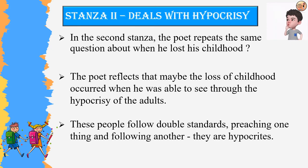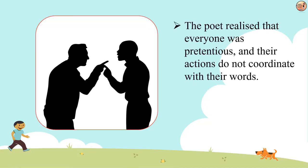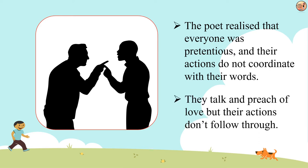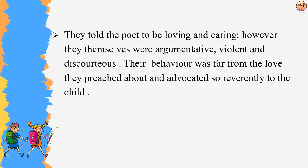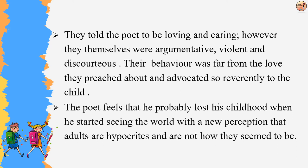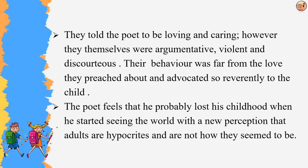These people follow double standards, preaching one thing and following another. The poet realized that everyone was pretentious and their actions do not coordinate with their words. The adults talk and preach of love but their actions do not follow through. They told the poet to be loving and caring; however, they themselves were argumentative, violent and discourteous. The poet feels he probably lost his childhood when he started seeing adults as hypocrites.